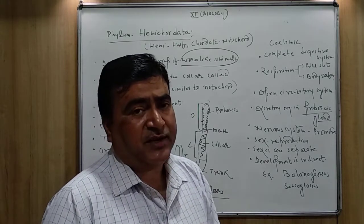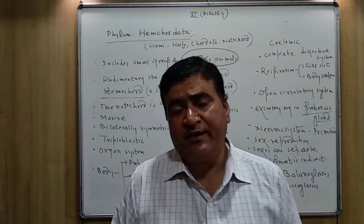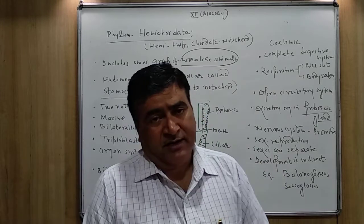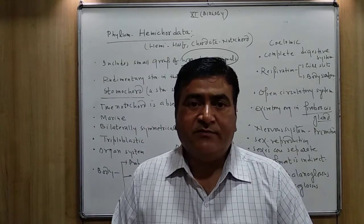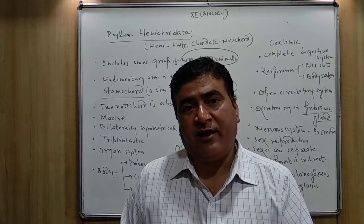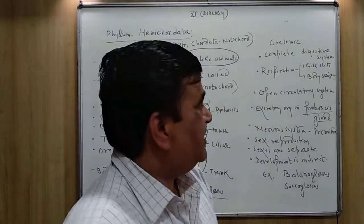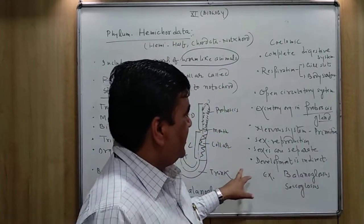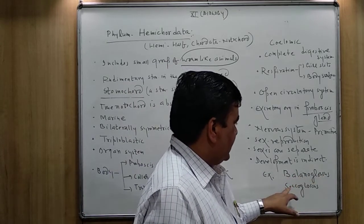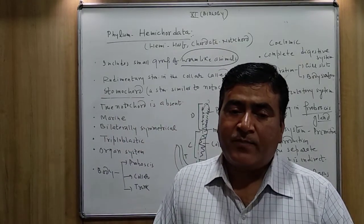They reproduce bisexually — the sexes are separate, with males and females differentiated from each other. The development is indirect — in the life cycle, a larval stage is present. The zygote develops first into a larva, then the larva is transformed into the adult. Because of the larval stage in their life cycle, the development is called indirect. Two examples given are Balanoglossus and Saccoglossus — both are included in phylum Hemichordata.